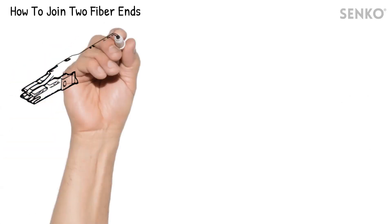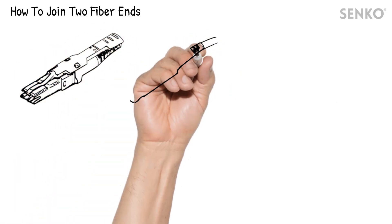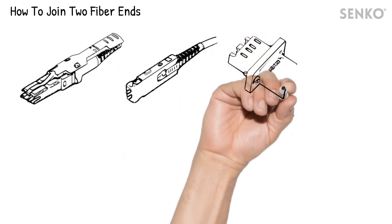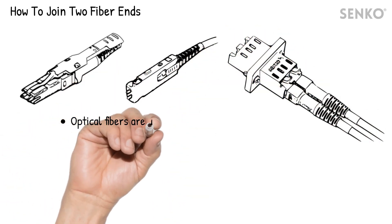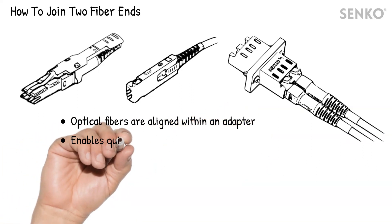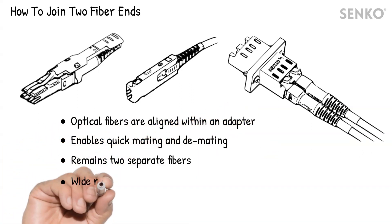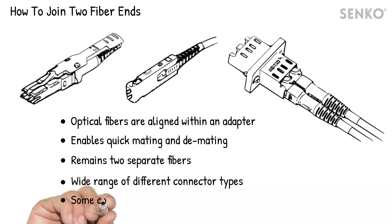Optical connectors hold the fibers in place and are aligned and butted against each other within an adapter to make a connection. Connectors are used where quick mating and demating is needed. There is a wide range of connector types, and some even have better optical performance compared to splicing.